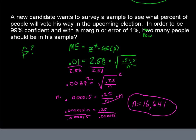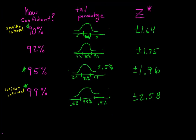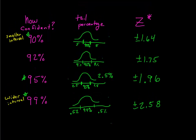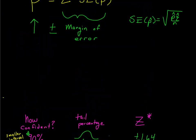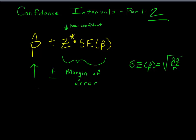Hopefully these problems made sense. You now understand how to solve for sample size based on margin of error, how to get different Z* scores based on confidence level, and how to find a confidence interval. Remember, confidence intervals are trying to find the true proportion of whatever we're looking for. Have a good weekend — talk to you later.